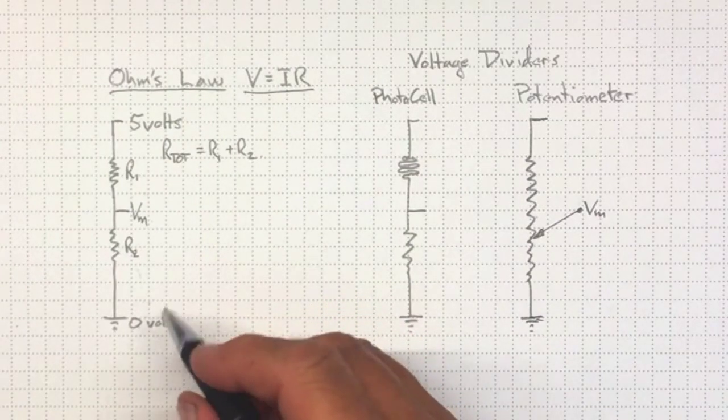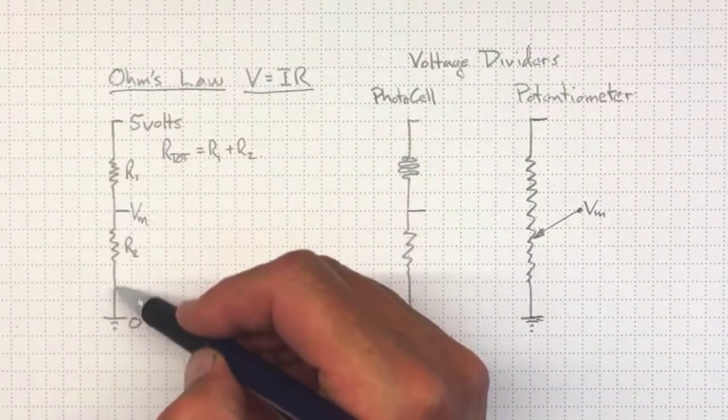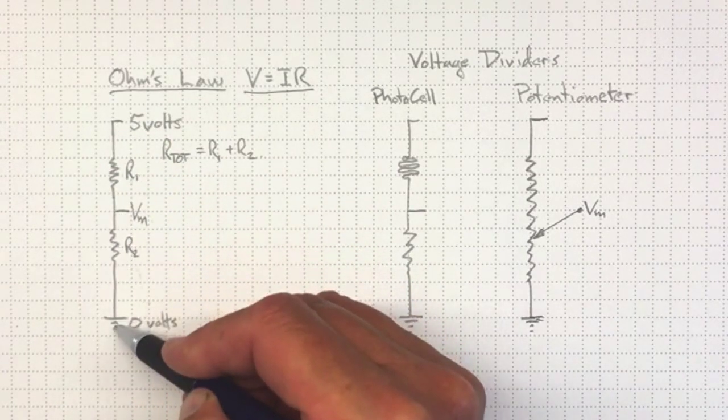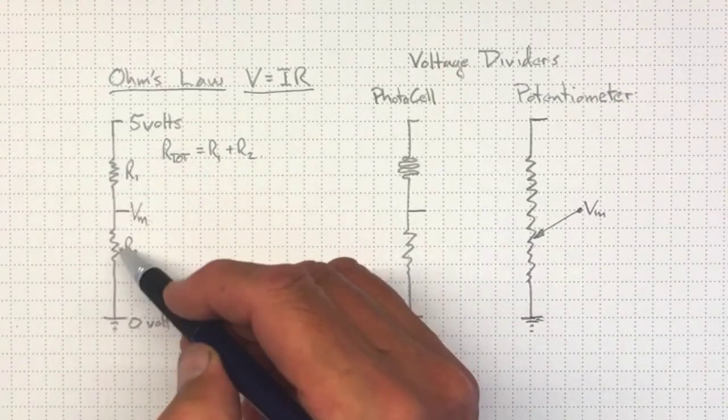And we can look at the current flowing. Because it's a single path, any current that flows in here flows through that resistor, flows through that resistor as well. So all the currents are the same.